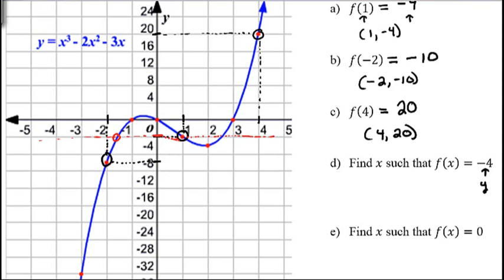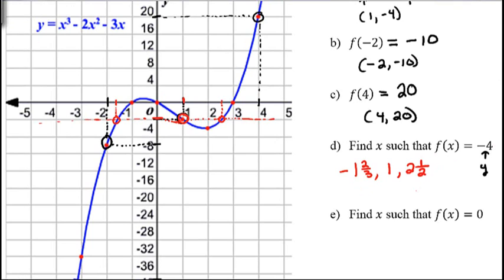So one place that it intersects is right here. And so that x value is about, looks like negative 1 and 2 thirds. It also happens right here, which is positive 1. And it also happens right here. And that looks like it's about 2 and a half. And so we could list these corresponding points as well. These that we have listed here are the x values. So we would have the point negative 1 and 2 thirds, negative 4. 1, negative 4 using this one. And then 2 and a half, negative 4 using this one.